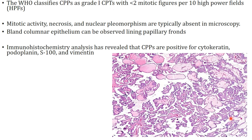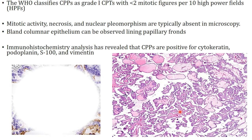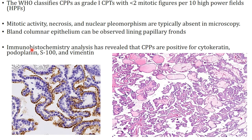Other studies have found associated germline mutations in TP53 as well as 9p duplication and hypomelanosis. WHO classifies choroid plexus papillomas as grade 1 with less than 2 mitotic figures per 10 high power field. There are arborizing papillae lined by columnar epithelium which is bland in appearance; mitotic activity, necrosis and nuclear pleomorphism are lacking. Immunohistochemically, these are positive for cytokeratin, podoplanin, S100 and vimentin.